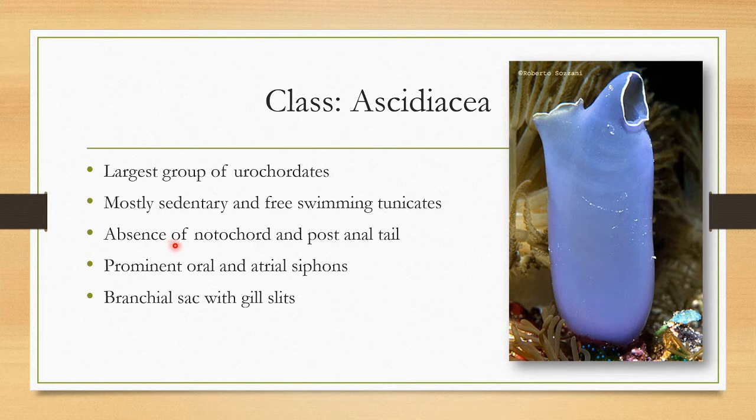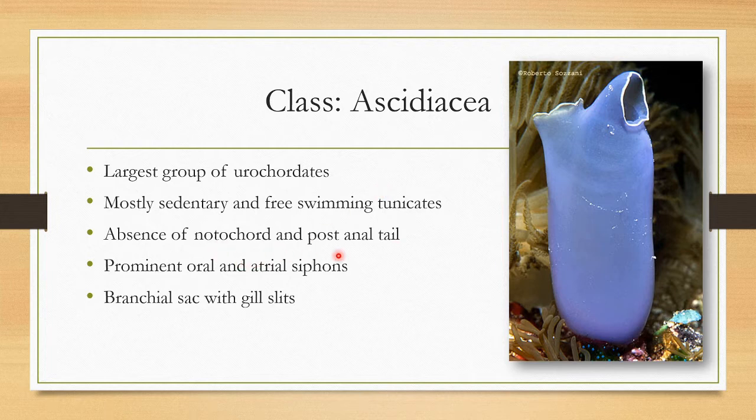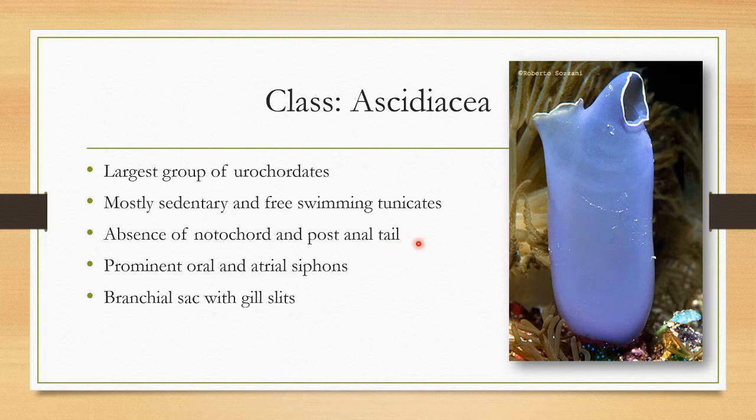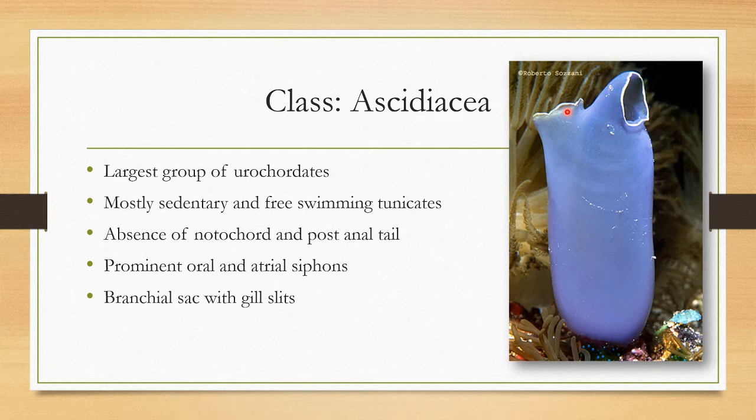There is no notochord and post-anal tail in the adult, but it is present in the larval forms. The notochord and post-anal tail is absent in the adult but present in the larva. There are two openings called oral and atrial siphons. This is the oral siphon and this is the atrial siphon.